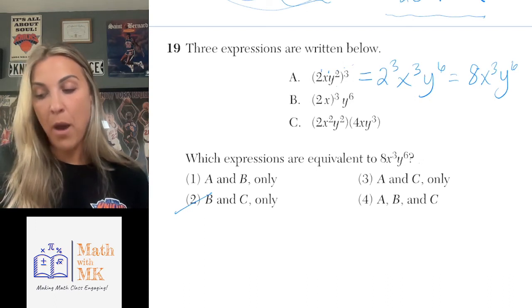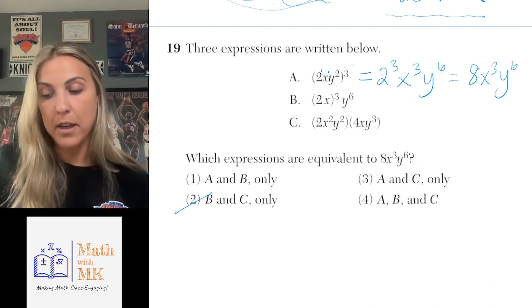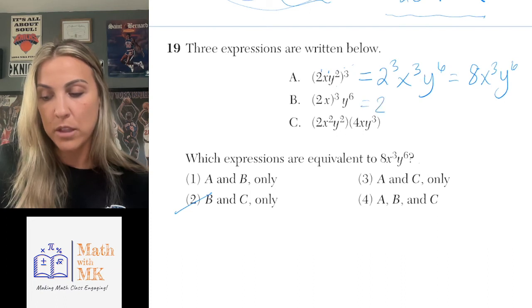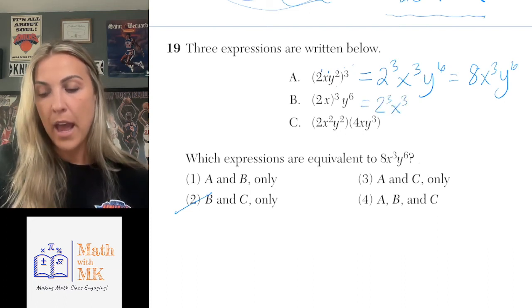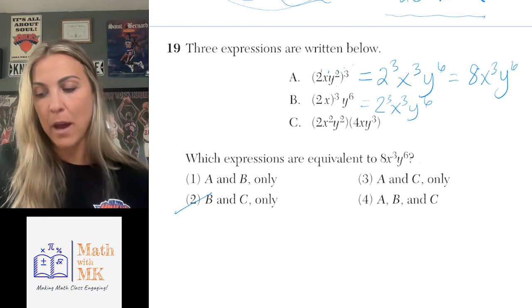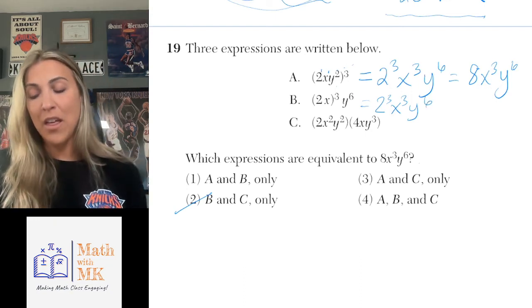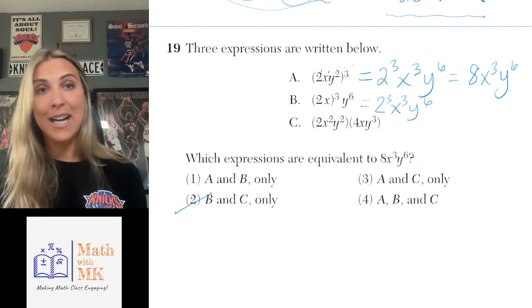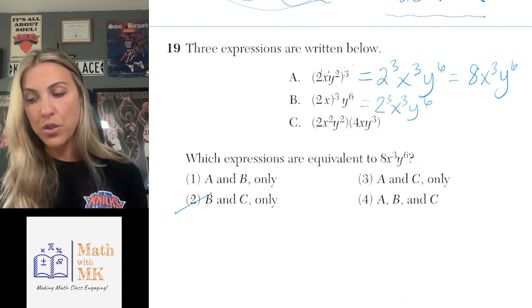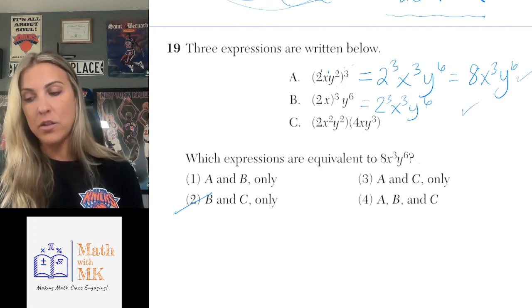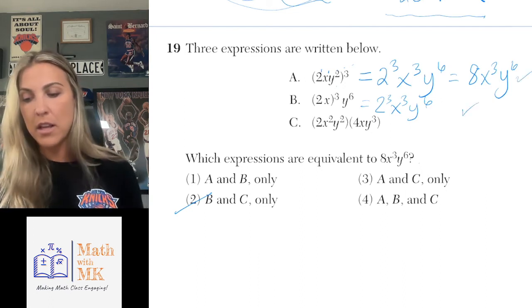For choice B, I have power-to-power again — 2x is being raised to the third power. That's 2 to the third power times x to the third power, times y to the sixth on the outside. That looks exactly like 8x cubed y to the sixth, so B is also equivalent. Since both A and B work, I can eliminate answer choice 3 which says only A and C work.